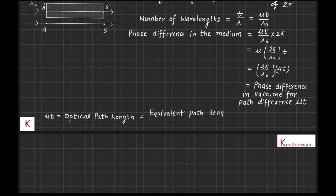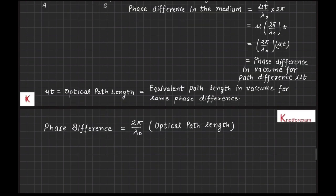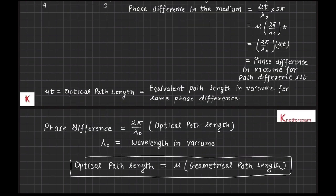Here mu t is called the optical path length which is equivalent path length in vacuum for same phase difference. Therefore phase difference equals 2 pi by lambda naught into optical path length, where lambda naught is wavelength in vacuum and optical path length equals mu times geometrical path length.